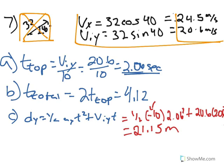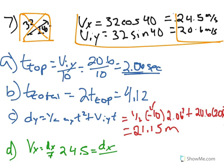For D, it asks for horizontal displacement, which is dx. We use vx equals dx over t, where vx is 24.5. In this case we use t equals 4.12 seconds, because that's the time that gets us all the way back to the ground. Multiplying 4.12 by 24.5, we get dx equal to 100.7 meters.